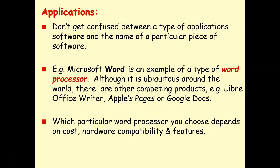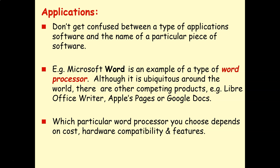An important point is to not get confused between a type of application software and the name of a particular piece of software. For example, Microsoft Word is an example of a type of word processor. Although Microsoft Word is fairly ubiquitous, there are other products you could use — Apple's Pages, Google Docs, LibreOffice Writer. There are lots of different word processors you can choose depending on cost, hardware, compatibility, and features.